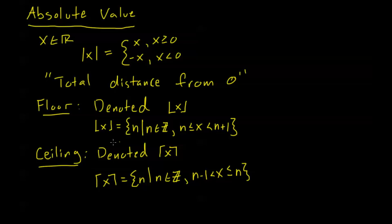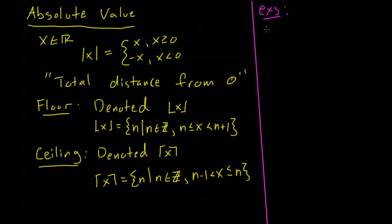Otherwise, the floor is just the integer below x and the ceiling is just the integer above x. Let's do some quick examples. The absolute value is pretty easy — the absolute value of a positive number by definition is just the number itself. So the absolute value of 5.3 is just equal to 5.3. And the absolute value of negative 17: since negative 17 is less than 0, it's going to be negative negative 17, or in other words, positive 17.